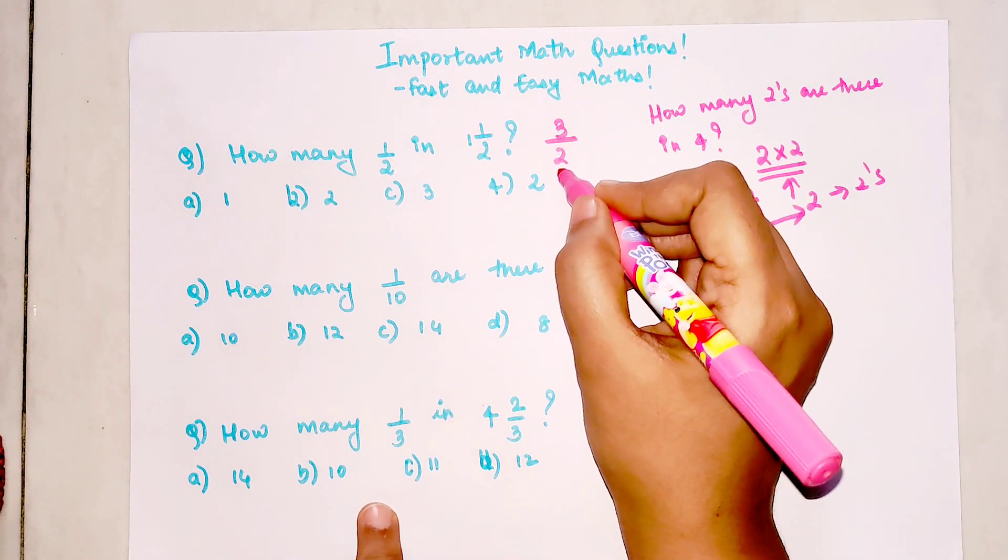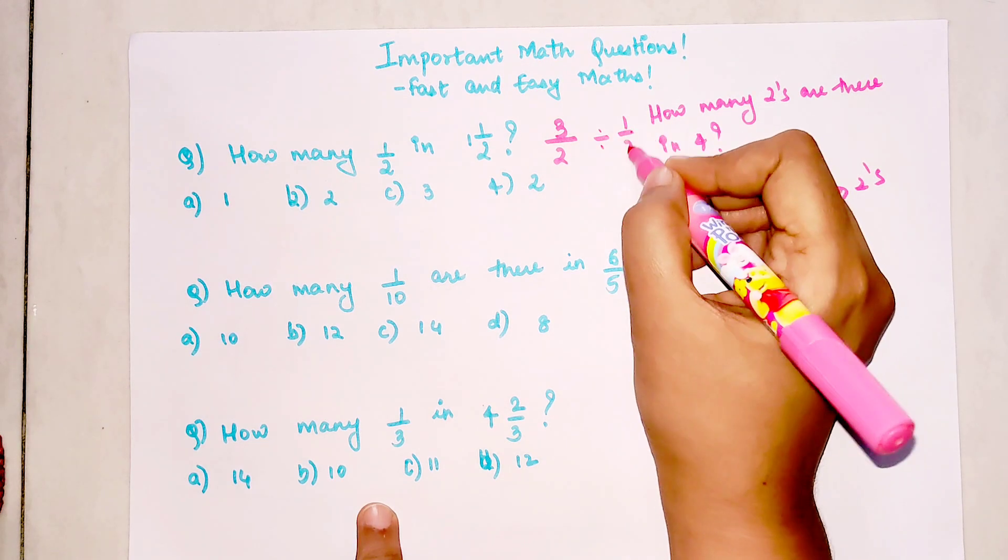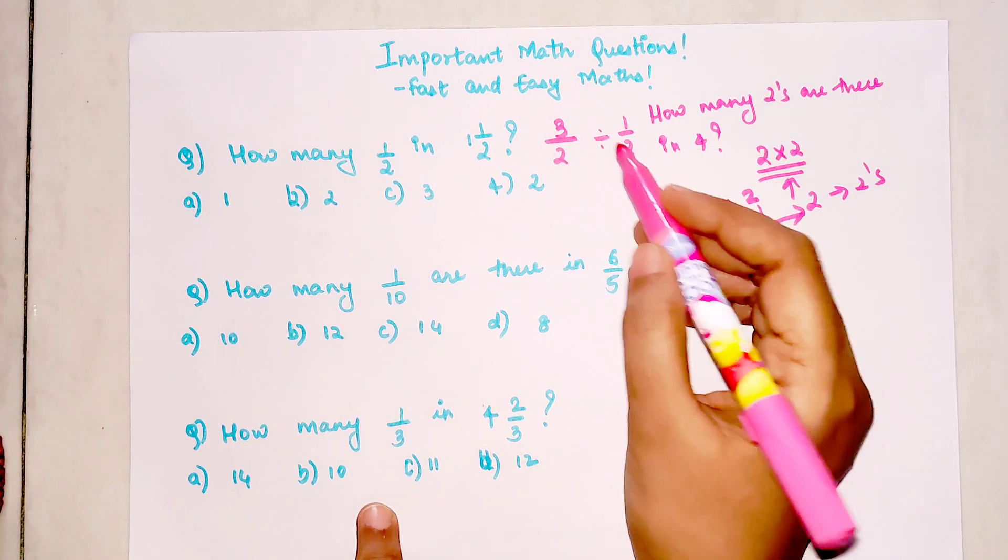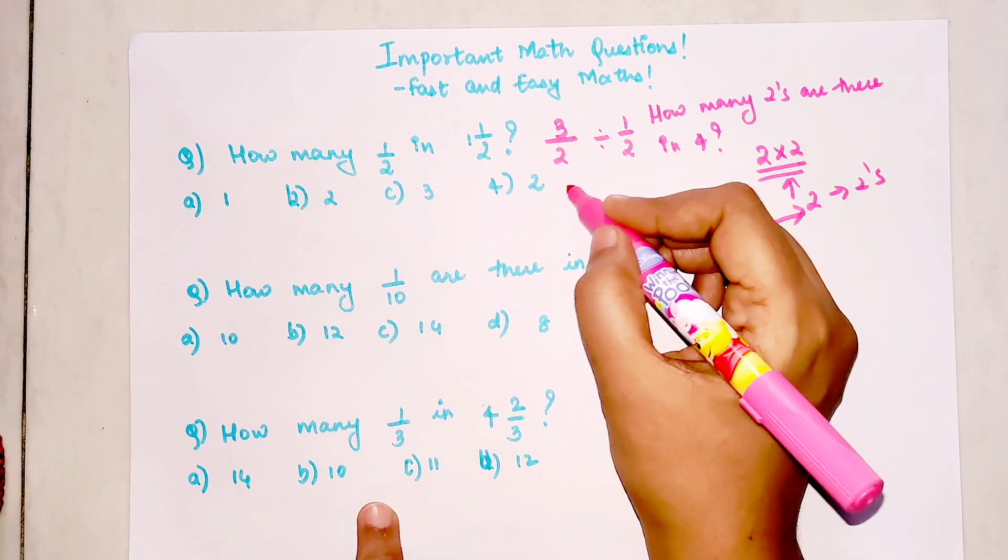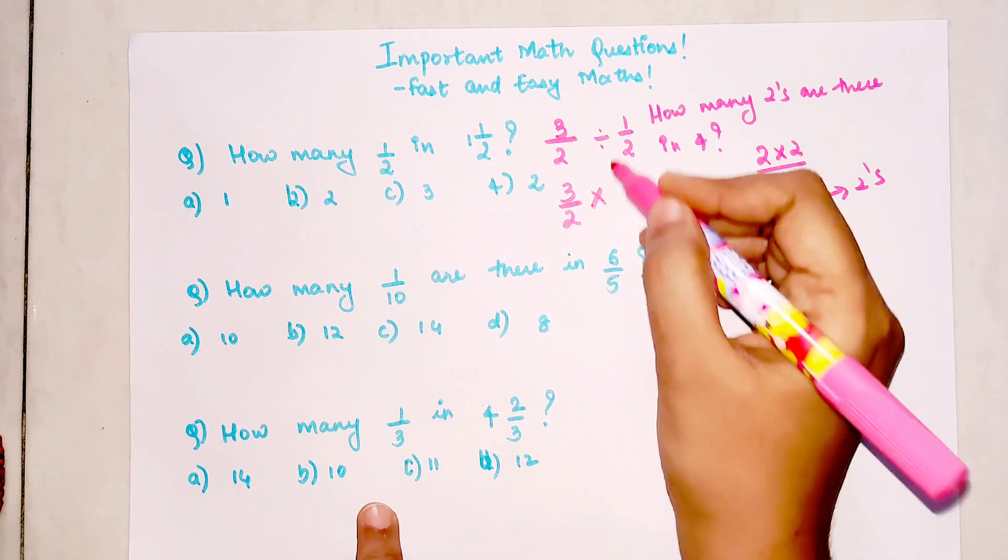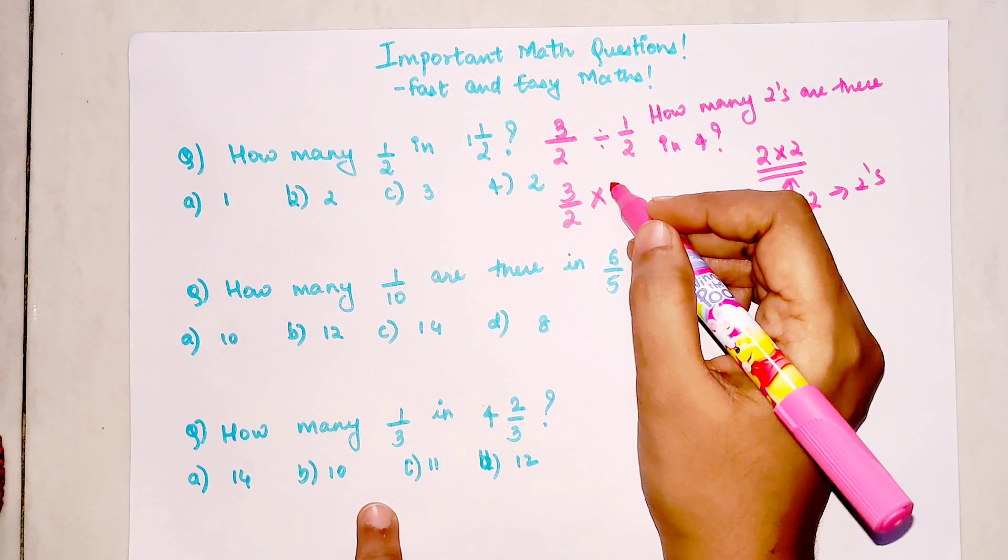That you are going to divide by 1/2. Whenever you are dividing a fraction by a fraction, you can keep the first fraction as it is, and this division sign can change into multiplication sign.